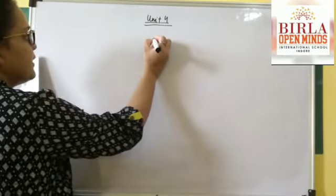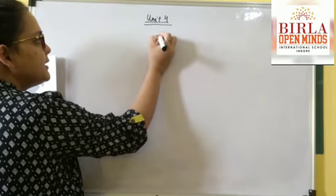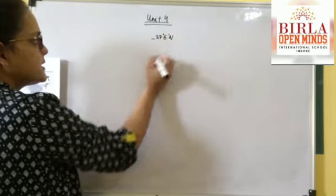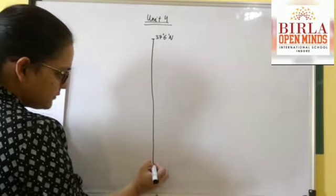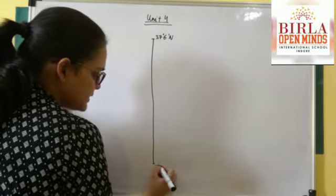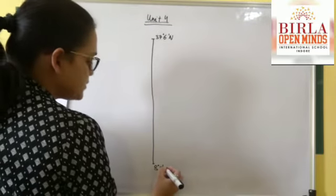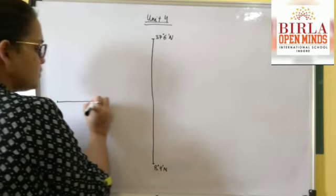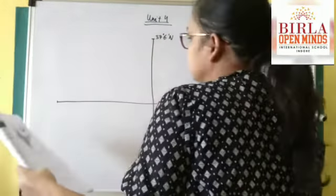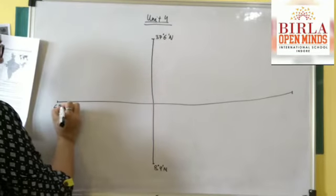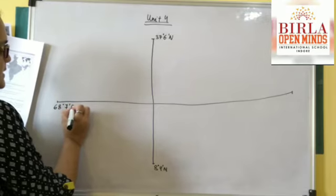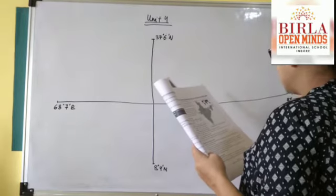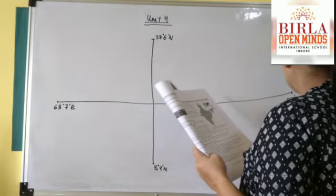Let me explain with the help of a diagram. This is India. In the north we have 37 degrees 6 minutes north. In the south we have Kanyakumari, that is 8 degrees 4 minutes — which is still north, because we are in the northern hemisphere. In the east, near Gujarat, we have 68 degrees 7 minutes east. And to the east it is 97 degrees 25 minutes east. These are the coordinates of India.